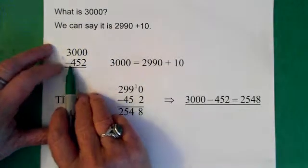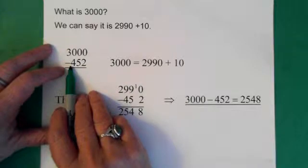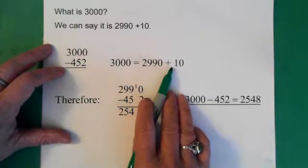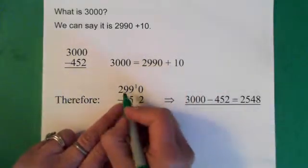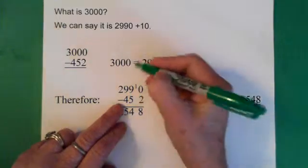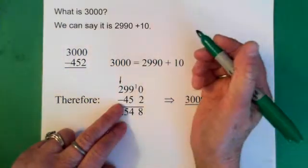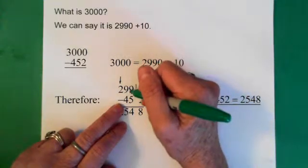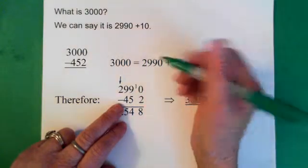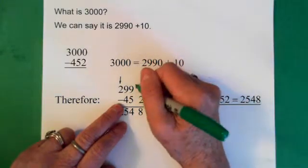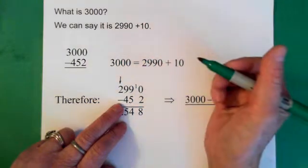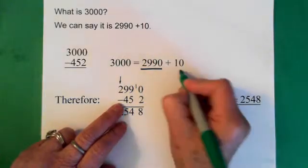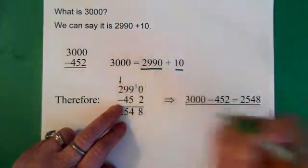If we start here with 3,000 minus 452, we know we can change the 3,000 into this. So, 2,990. Don't forget this is in the thousands place, so that's definitely 2,000. And here, as soon as we put that 1 there, this becomes a 10. So we have this, and this piece here is our additional 10.